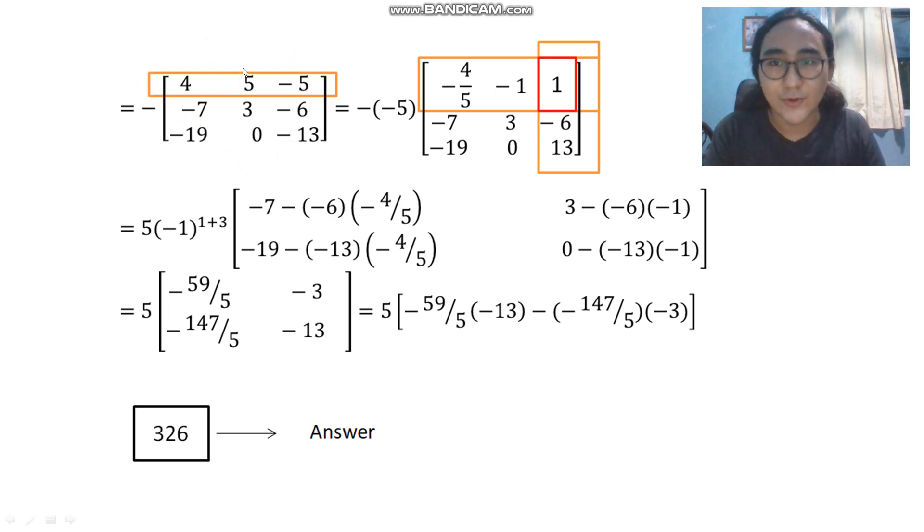We're going to make our own. So if you've noticed here, we have 2 5s here. 1 is a positive, 1 is a negative. So we can take out a negative 5 here in order to make this corner 1. And that will transform this entire row. This row only.